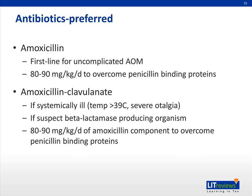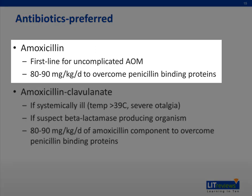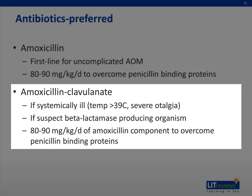The preferred treatment for acute otitis media is high-dose amoxicillin. It should be administered at a dose of 80 to 90 milligrams per kilogram per day in order to overcome penicillin binding proteins. Amoxicillin-clavulanate can also be considered for first-line therapy if the patient appears severely ill or if infection with a beta-lactamase-producing organism is suspected. It should also be prescribed based on a dosage of 80 to 90 milligrams per kilogram per day of the amoxicillin component.